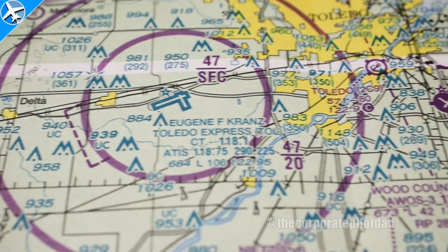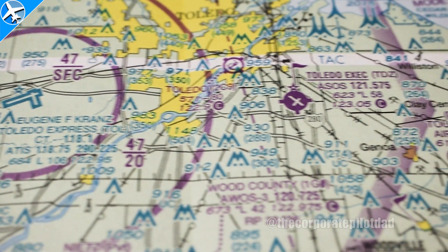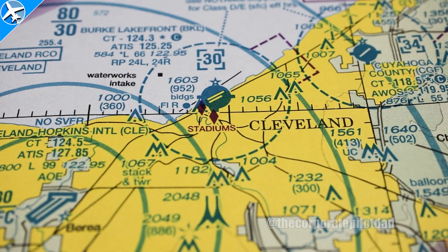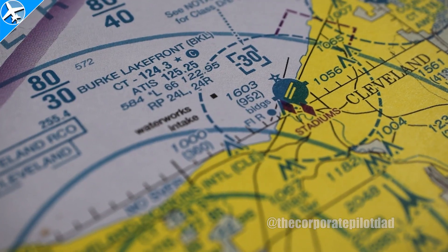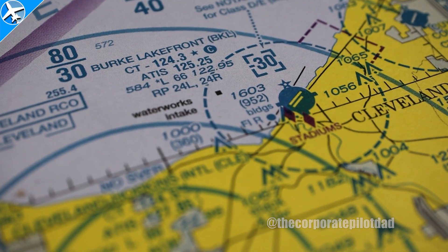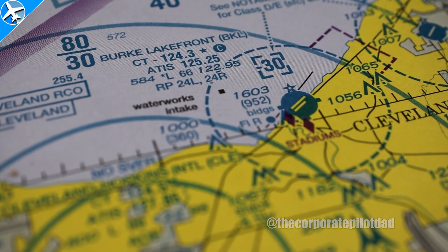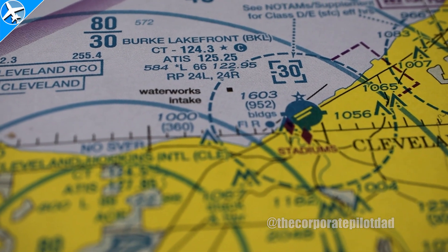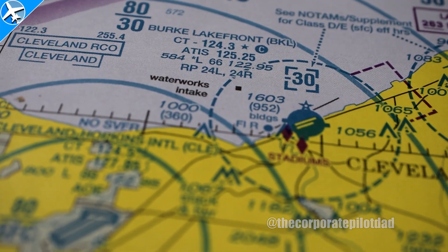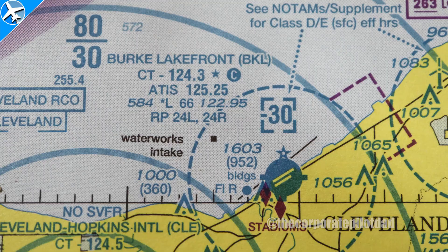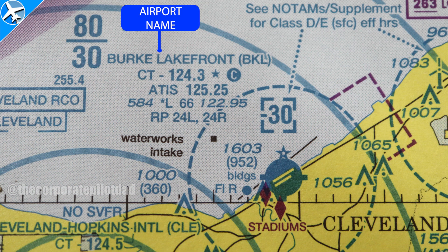Let's pretend we're doing a flight from Toledo Express in Toledo, Ohio, heading east to Cleveland's Burke Lakefront Airport. Out in the water to the northwest, there's a block of information about Burke Lakefront Airport. Let's break down what each piece of information actually means.